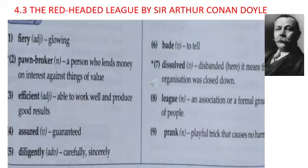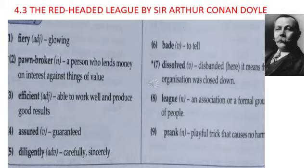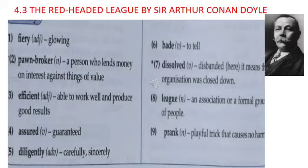Arthur Conan Doyle was born on 22nd May 1859 in the United Kingdom. Sir Arthur Ignatius Conan Doyle was a British writer and medical doctor. He created the character Sherlock Holmes in 1887 when he published 'A Study in Scarlet,' the first of four novels and more than 50 short stories about Holmes and Dr. Watson. Some of his works include Sherlock Holmes, Holmes and Watson, and Sherlock Holmes and Dr. Watson. He died on 7th July 1930 in the United Kingdom.